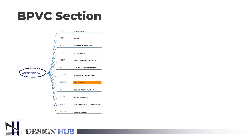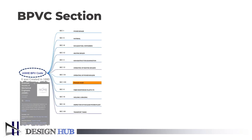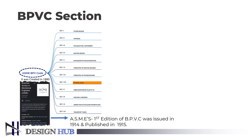ASME was founded in 1880. It was provided for engineers to discuss the concerns brought by the rise of industrialization and mechanization. Rules for the construction of stationary boilers and for allowable working pressure is the first edition of ASME's Boiler and Pressure Vessel Code. It was issued in 1914 and published in 1915.